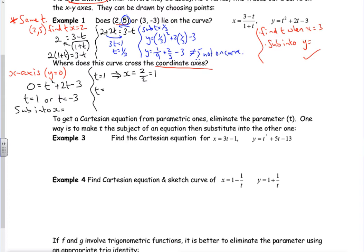When t is -3, x would be (3 - (-3)), so that's 6 over (1-3) is -2. So that's -3. So I've got two sets of coordinates. For when y is 0, I've got (1, 0), I've got (-3, 0).